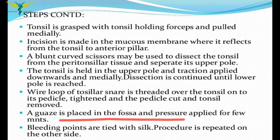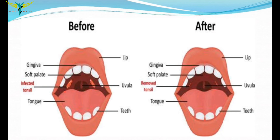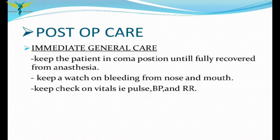A wire loop is then tightened and the pedicle is cut, removing the tonsil. A gauze is placed into the fossa and pressure is applied for a few minutes to decrease bleeding. The gauze is then removed, bleeding points are observed and tied with silk. This completes tonsillectomy on one side, and the procedure is then repeated on the other side.